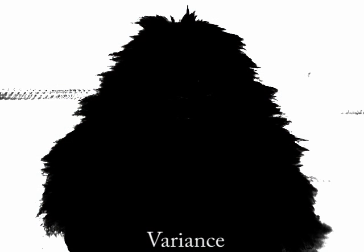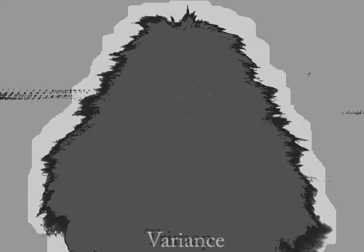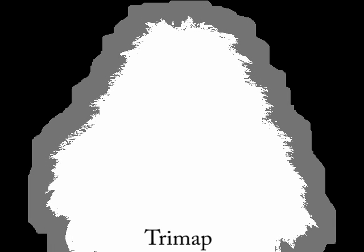For points that lie on a foreground object, the variance is low as all the cameras are focused on that point and see the same colors. The variance is high for pixels that do not lie on the foreground object as the cameras are synthetically out of focus for these pixels. We double-threshold the variance image to create a trimap which labels each pixel as foreground, background, or unknown.